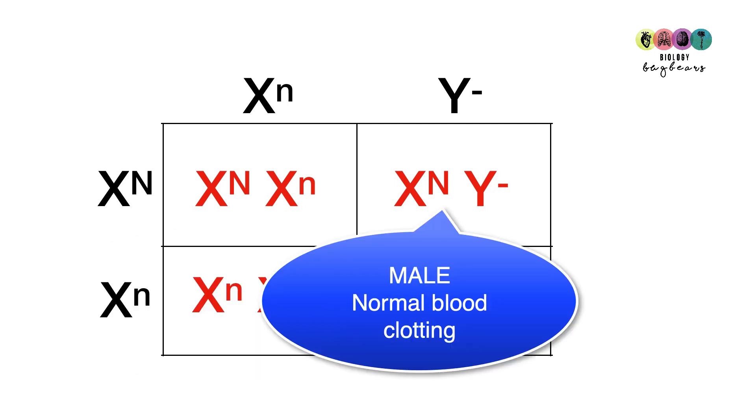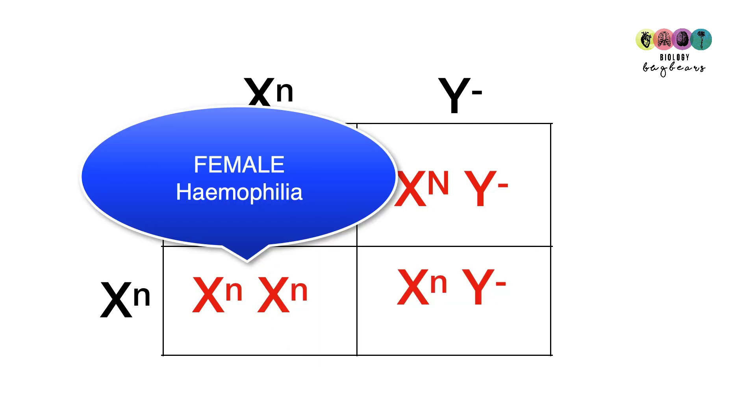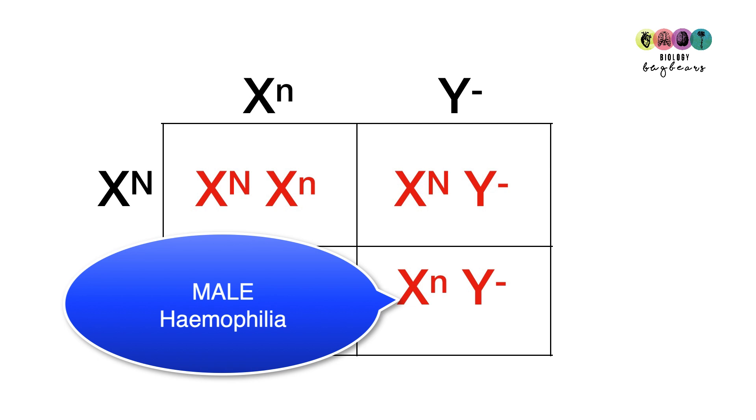The next offspring is XY, so that's a male. And this male has normal blood clotting factor, so it doesn't have hemophilia because it doesn't have that small n. The next offspring is XX, so that's a female. And this female has the two small recessive alleles, the two small n's. So this female has hemophilia. And the final offspring is XY, and this is a male. And this male does have that one small n on the X chromosome. So this male has hemophilia.